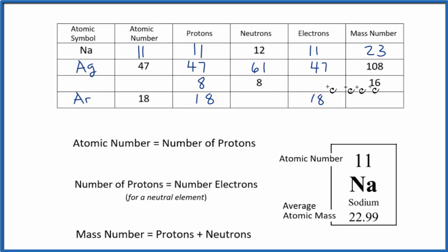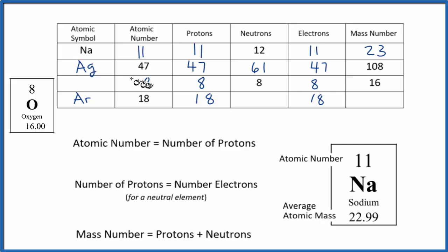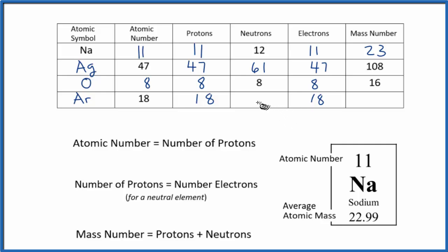Looking at another row, I haven't filled a lot of information in. The number of protons is 8, so the atomic number is 8. It's a neutral element, so it has 8 electrons. And looking up atomic number 8 on the periodic table, that's oxygen. So we're almost done filling this table in, except for one thing.